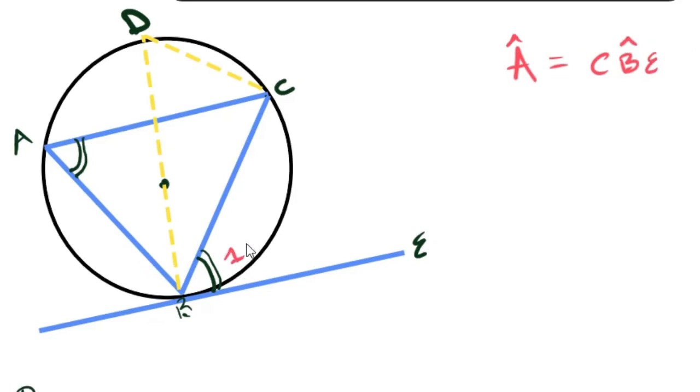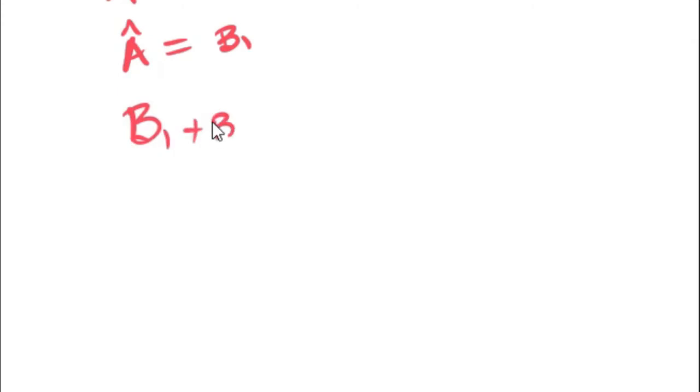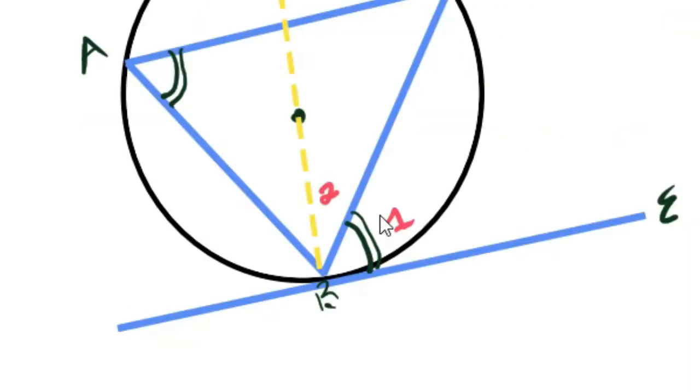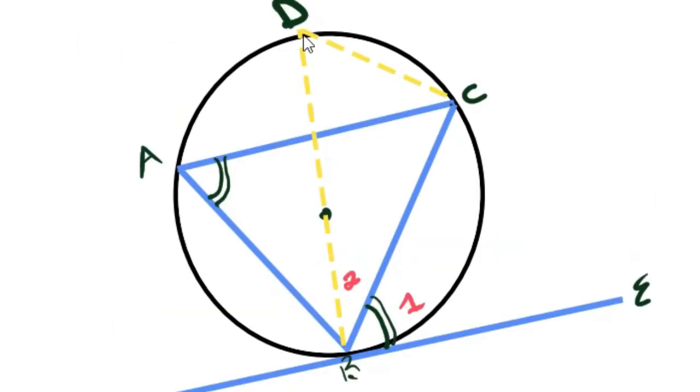So we are trying to prove that A is equals to C, B, E. Now let's call this 1, let's call this 2. So basically, we are trying to prove that A is equals to B1. So let's get into proving. The first statement I see is that B1 and B2 add up to 90 degrees. The line DB is passing through the center of the circle meaning that there is a radius connected to a tangent, and whenever a radius connects to a tangent, the resulting angle is 90 degrees.